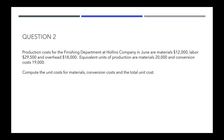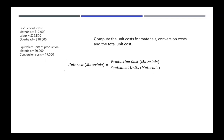Question number two requires you to compute the unit costs for materials, conversion costs, and the total unit cost. For the unit cost for materials, we take the production cost for materials — that's $12,000 — and our equivalent units were 20,000. So we do $12,000 divided by $20,000, and we see that one unit of materials will cost $0.60.